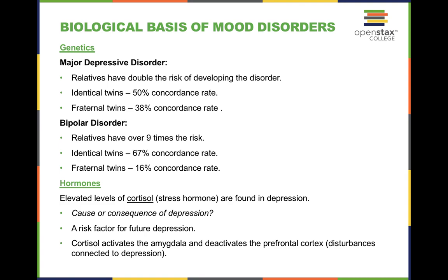When it comes to the biological basis of mood disorders, for MDD, relatives have double the risk of developing the disorder. Twin studies are particularly interesting: for identical twins, if one has MDD, there's a 50% concordance rate; for fraternal twins, it's a 38% concordance rate. For bipolar disorder, relatives have over nine times the risk of developing bipolar.